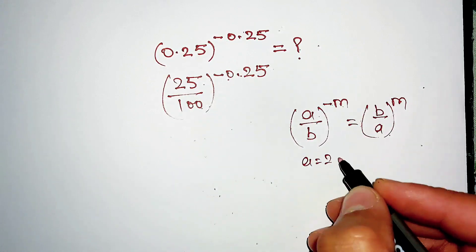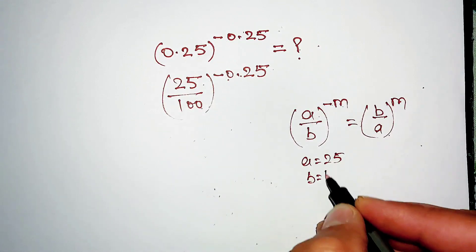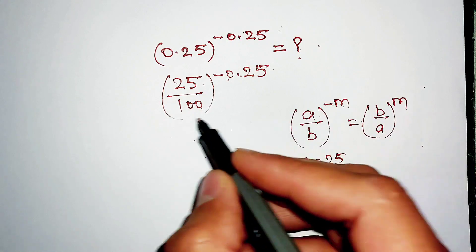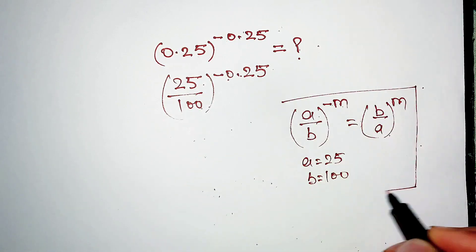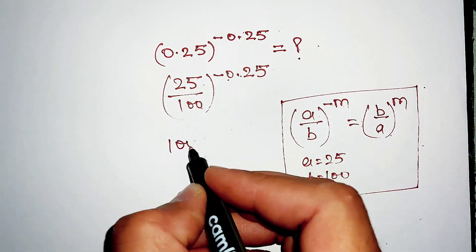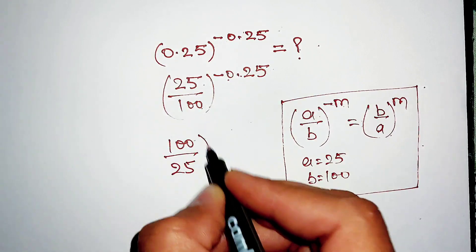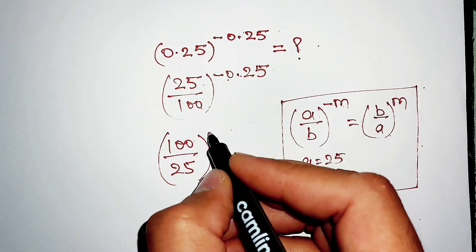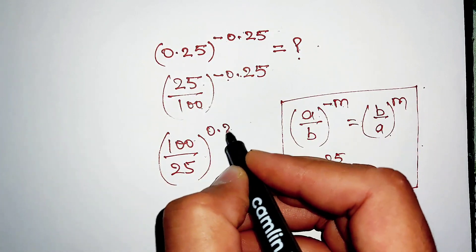Here a is 25 and b is 100. Applying this property, what we get is 100 divided by 25, and this power will become positive 0.25.